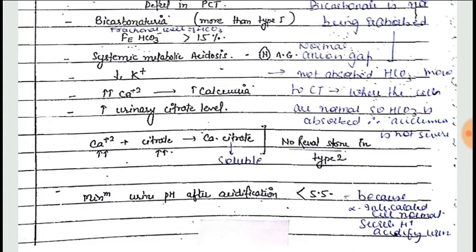Since citrate is also not absorbed in the PCT in Type 2, urinary citrate levels will be high. This is the key difference from Type 1: in Type 1 there is increased absorption of citrate and low urinary citrate, whereas in Type 2 there is no absorption of citrate in PCT cells, so urinary citrate is high. Calcium has more affinity for citrate and binds to it, forming calcium citrate, which is soluble.